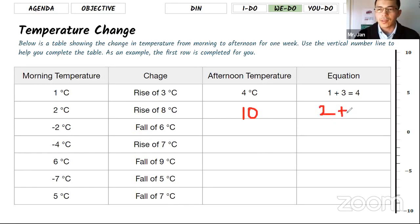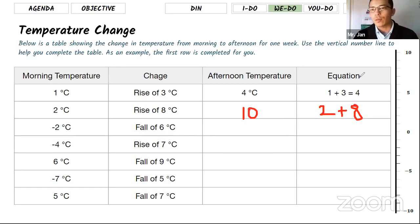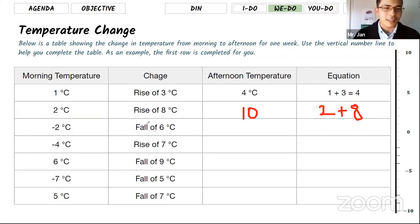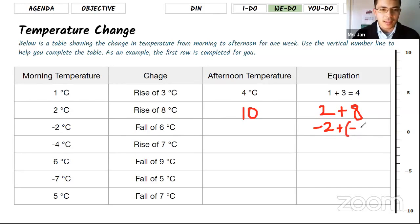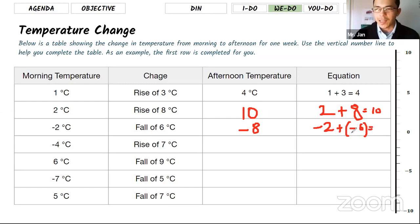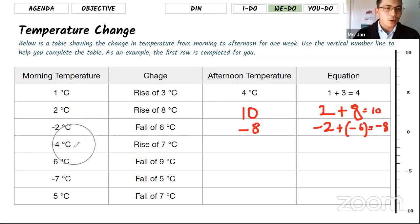Now tell me the next one: morning temperature is negative 2 and it fell down by 6 degrees. Only a couple of you missed that — it's okay, you corrected it. You started at negative 2, and because it fell, the change is negative 6. Two negatives: negative 2 plus negative 6 equals negative 8. And I didn't label the 10 earlier, so that's 10 for the previous row.